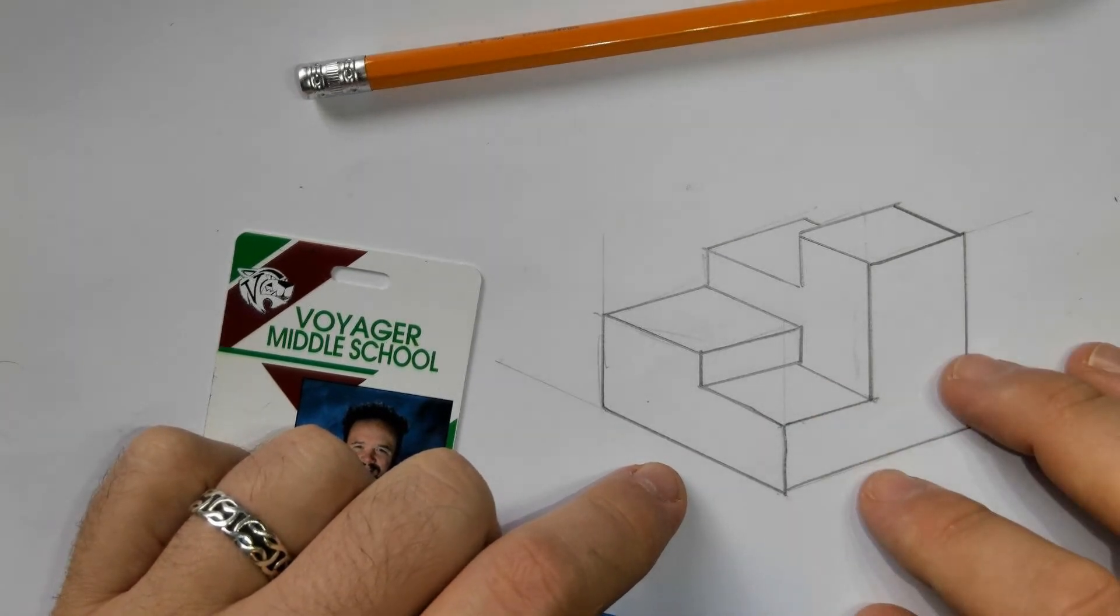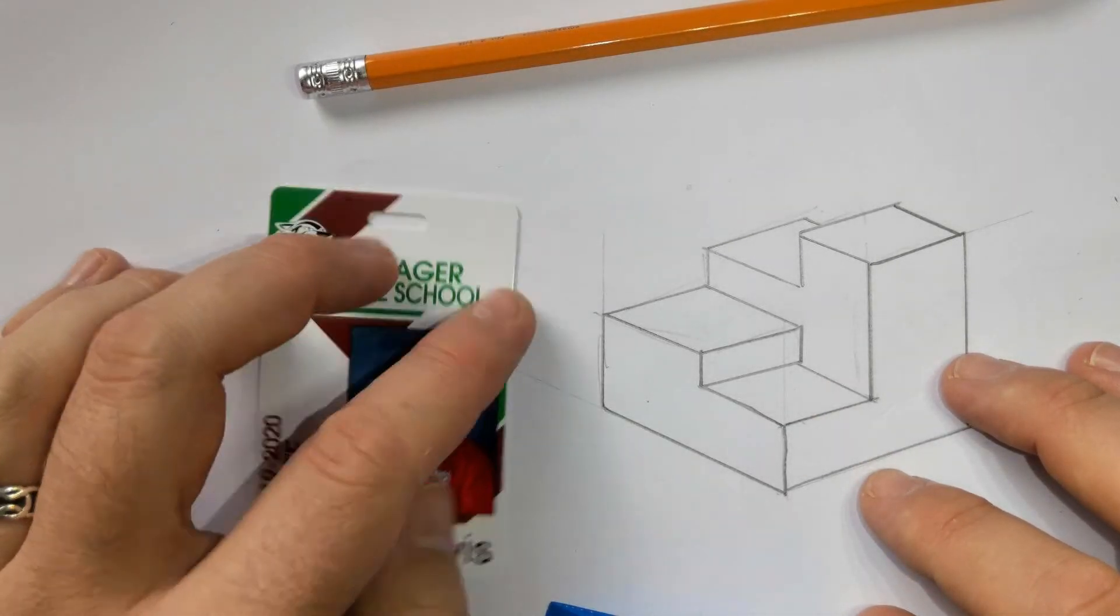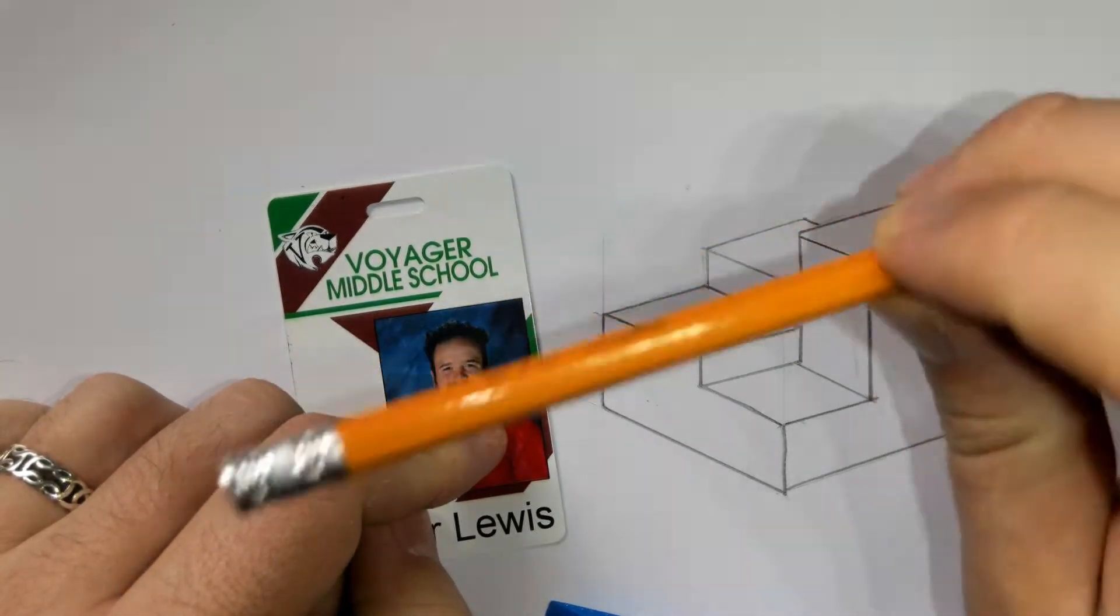I'm using just white paper. If you have isometric paper it's easier. If you have graph paper it's easier. I'm using my ID card as a straight edge and I got a pencil.